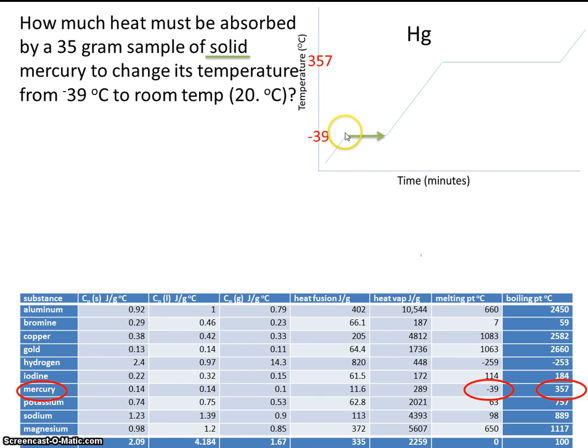So here it's a solid, we add heat energy, and here it melts. It's at -39°C the entire time. Then once it's melted, we're going to add more heat until we get up to 20 degrees, which is about right here. So you can see this is going to involve two steps and two different equations: the plateau and the slope.